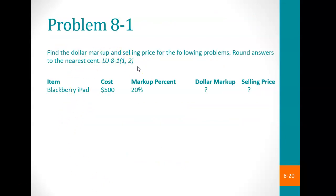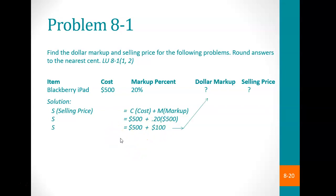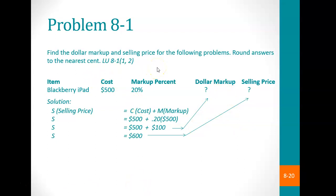Let's go through a few examples. For our first problem, cost is $500 and the markup is 20%. What is the actual dollar markup and the selling price? Selling price equals cost plus markup; the markup is 20% of the cost. So $500 plus 20% of $500 gives a selling price of $600. The dollar markup equals $600 minus $500, which is $100. This problem has markup based on 20% of cost.